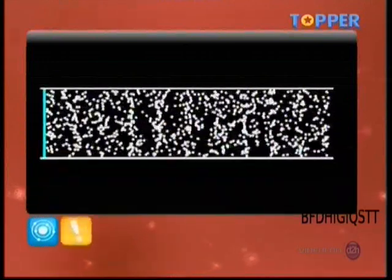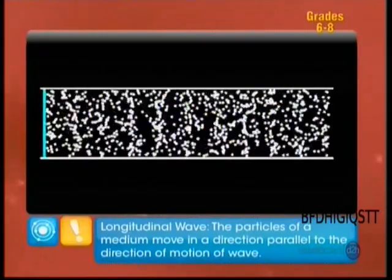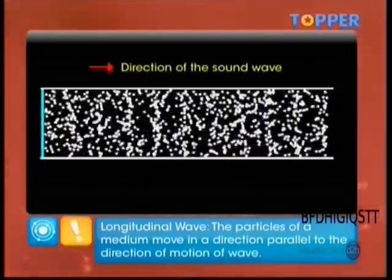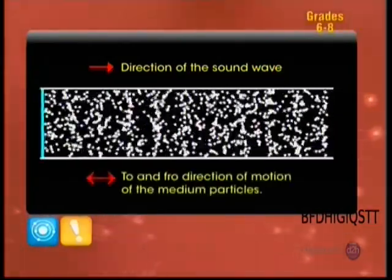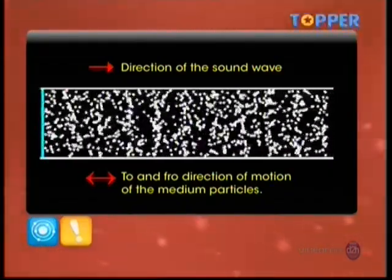The waves that travel in such a way are called longitudinal waves. In longitudinal waves, the individual particles of the medium move in a direction parallel to the direction of propagation of the disturbance. The particles do not move from one place to another, but they simply oscillate back and forth about their position of rest.